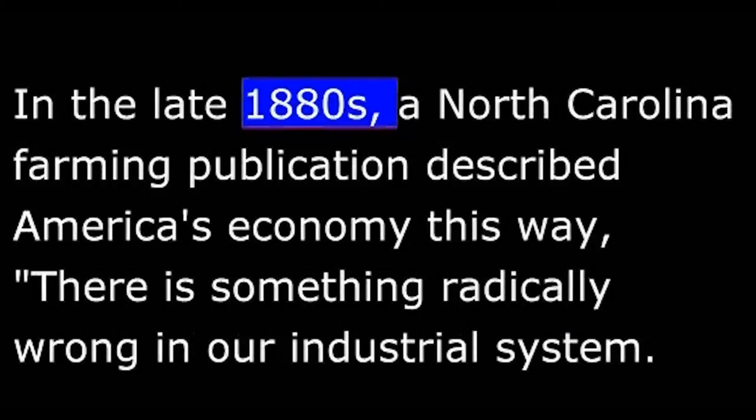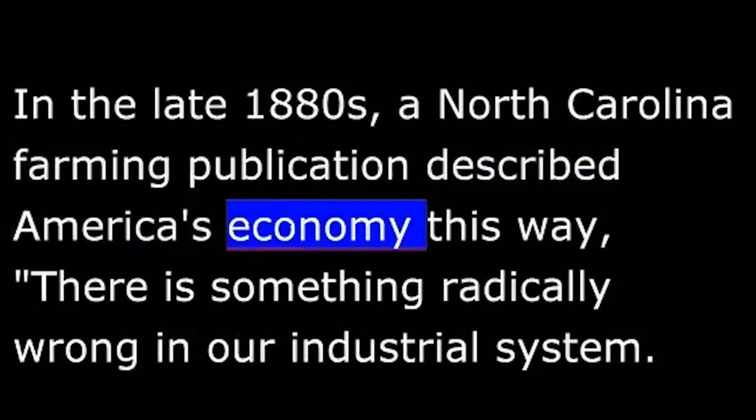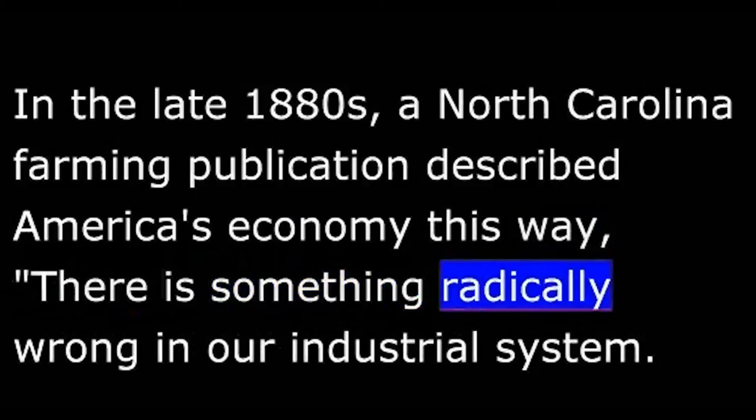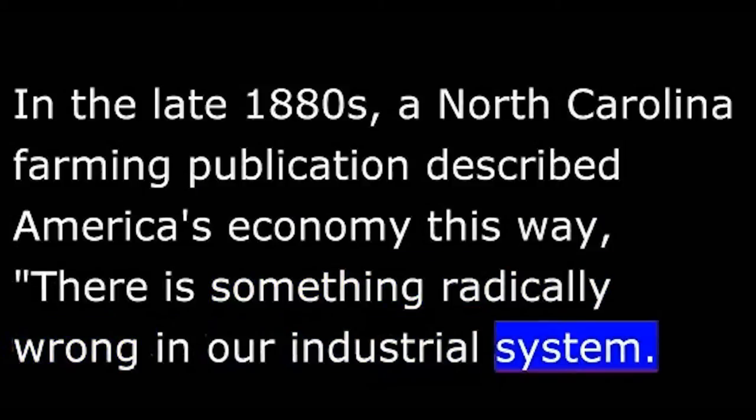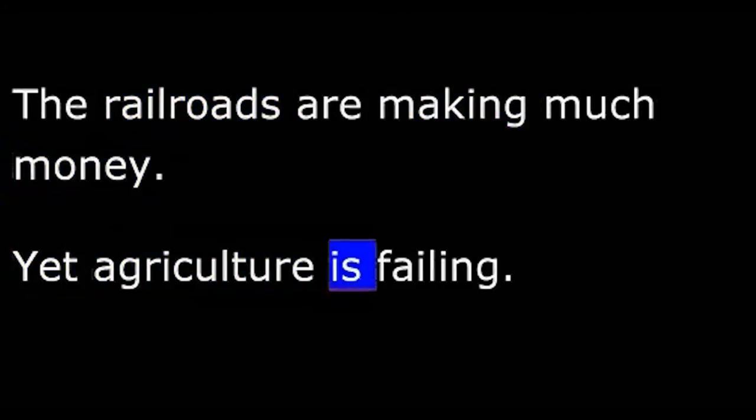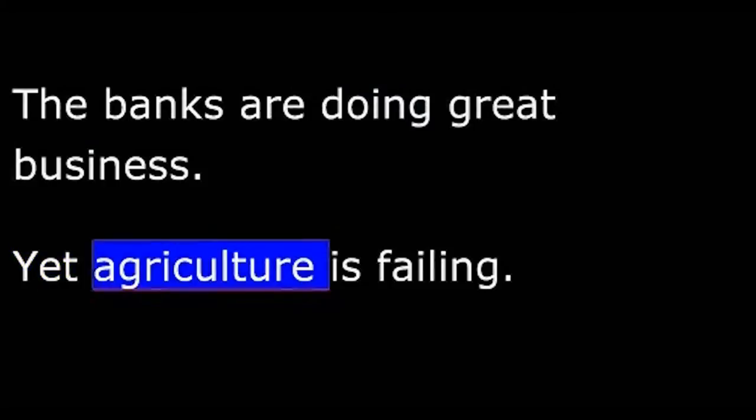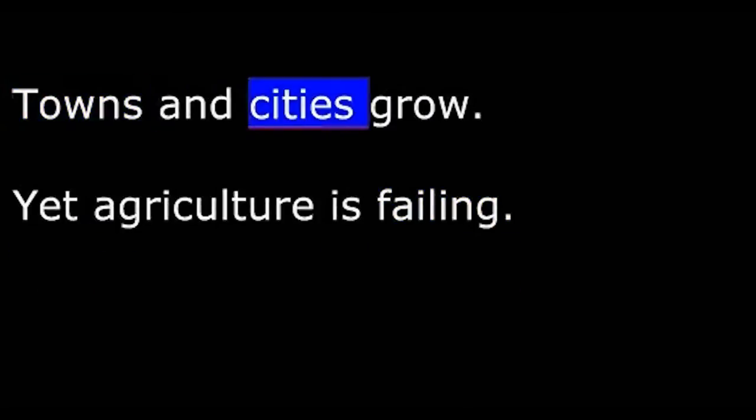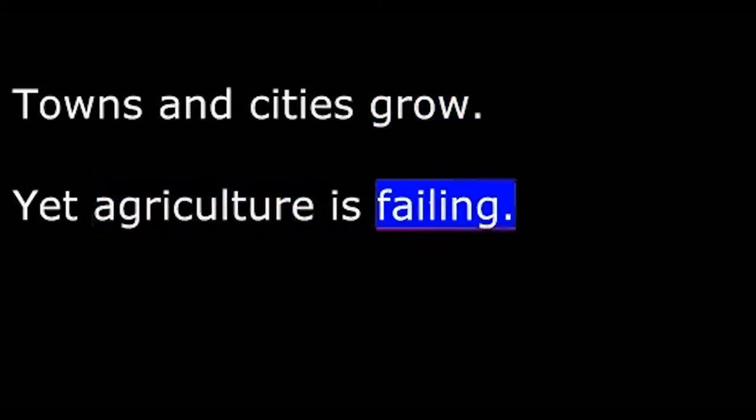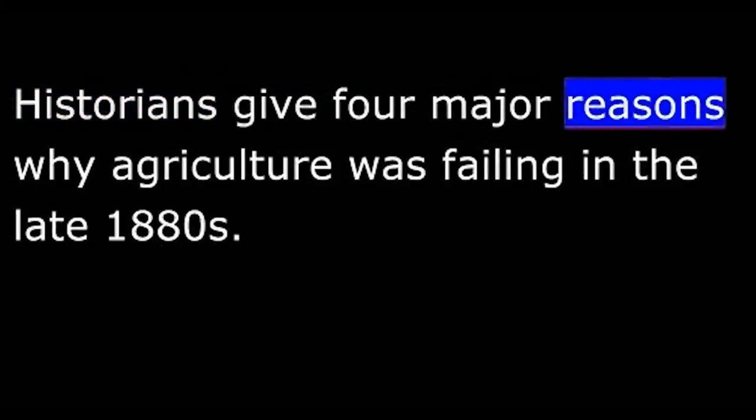In the late 1880s, a North Carolina farming publication described America's economy this way: There is something radically wrong in our industrial system. The railroads are making much money, yet agriculture is failing. The banks are doing great business, yet agriculture is failing. Towns and cities grow, yet agriculture is failing. Wages were never so high, yet agriculture is failing. Historians give four major reasons why agriculture was failing in the late 1880s.